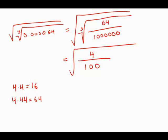So, that's just 4 over 100. Well, now when we take the square root of this, the square root of 4 is 2, the square root of 100 is 10.